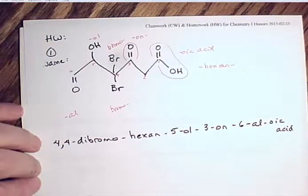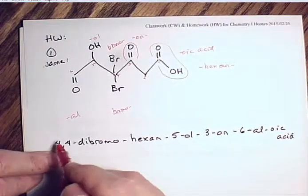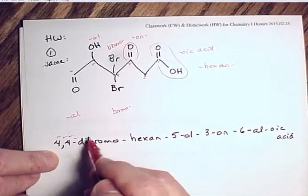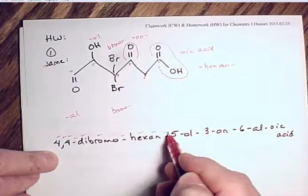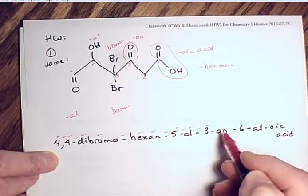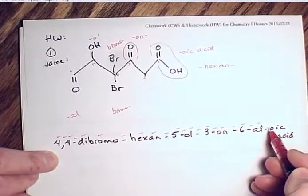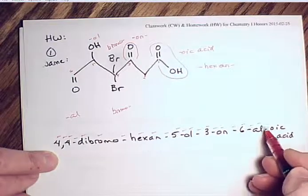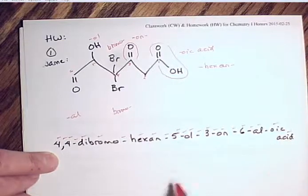Grading the answer: each component is worth a point — '4,4-dibromo,' root name, each suffix number and name. The carboxylic acid does not need a number since it must be on carbon one — it would be superfluous and you'd lose a point for including it. Counting all components gives 23 points total.